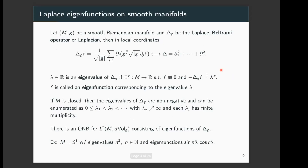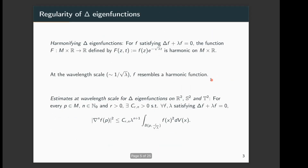If we take λ equal to zero, what we get is a harmonic function. Just like harmonic functions, Laplace eigenfunctions also have a lot of regularity properties, which can be seen by what is usually called harmonifying the Laplace eigenfunction. If you have a Laplace eigenfunction, you can consider the function F, which is the product of the Laplace eigenfunction with a certain factor, and this becomes a harmonic function on the manifold M cross R.